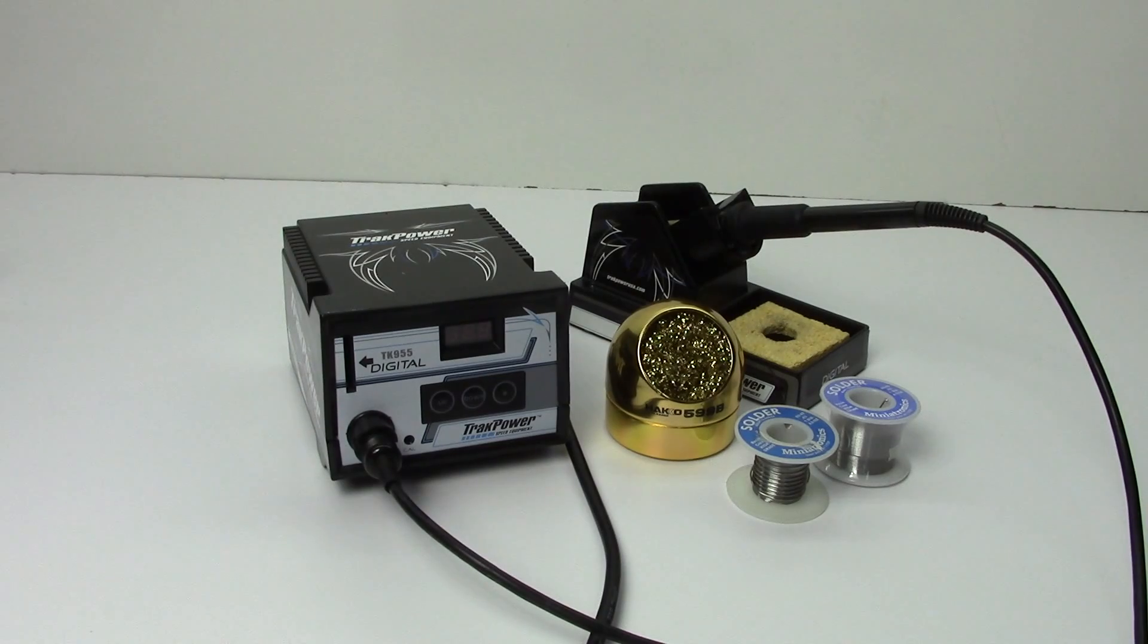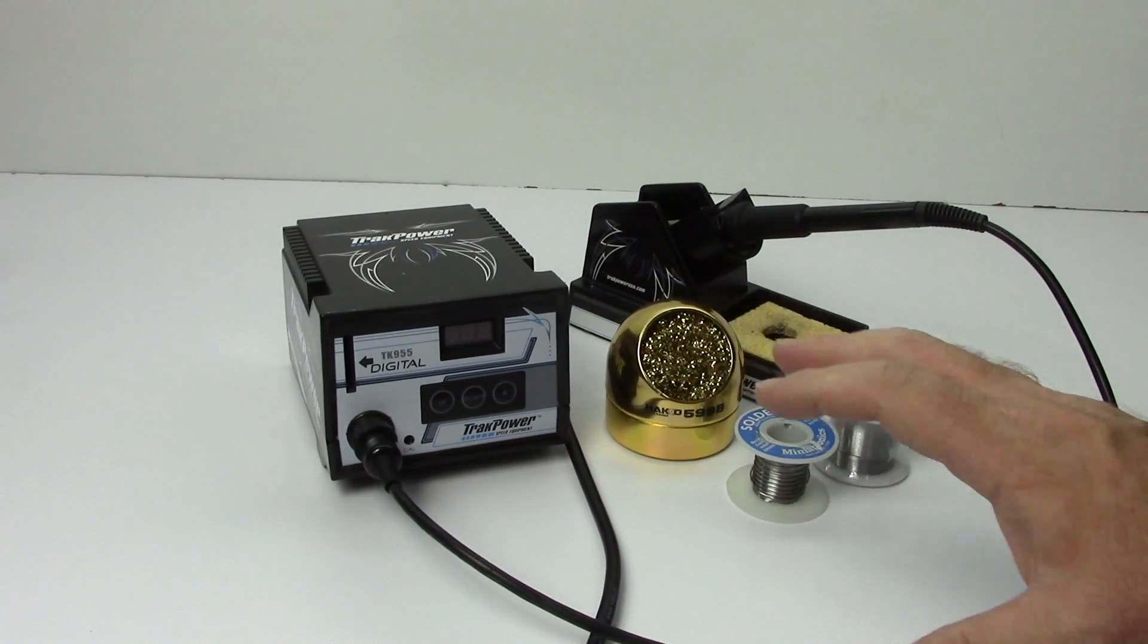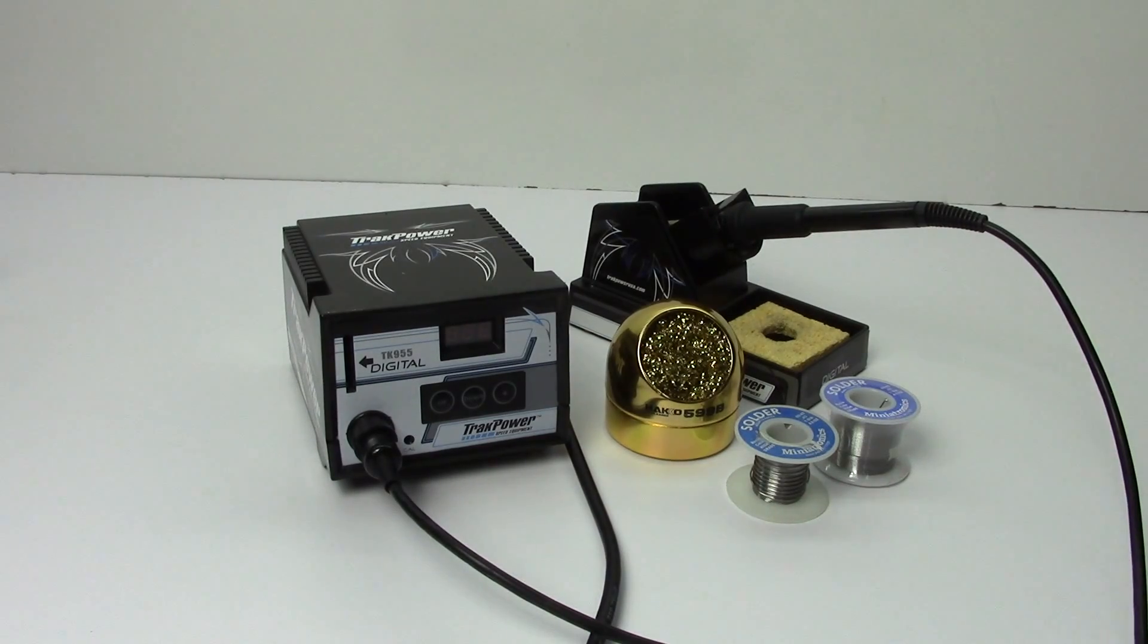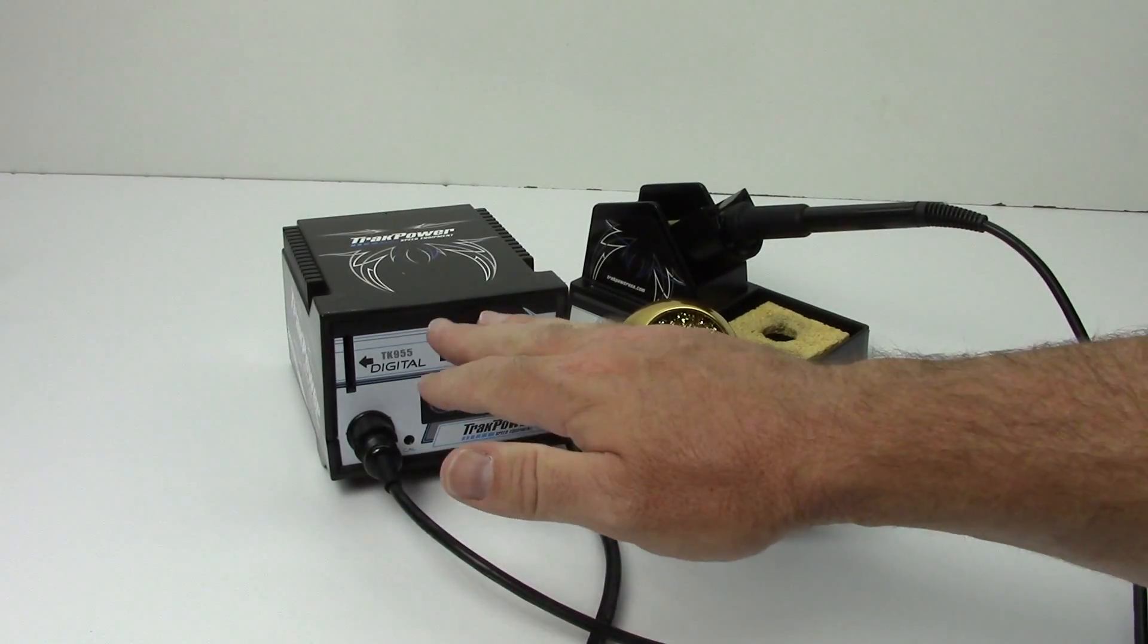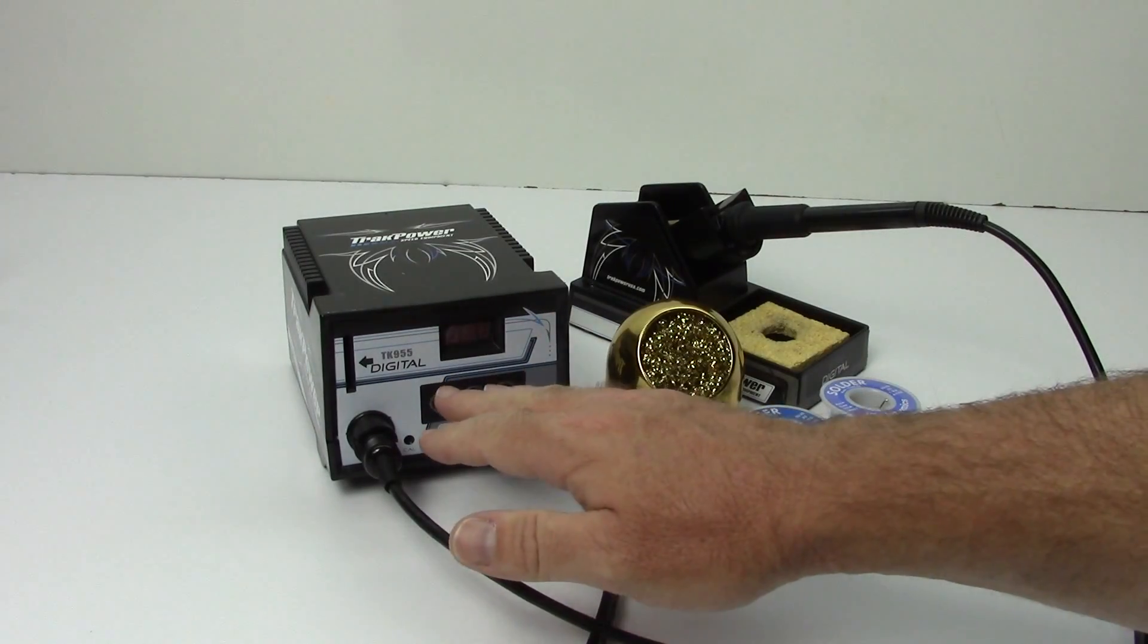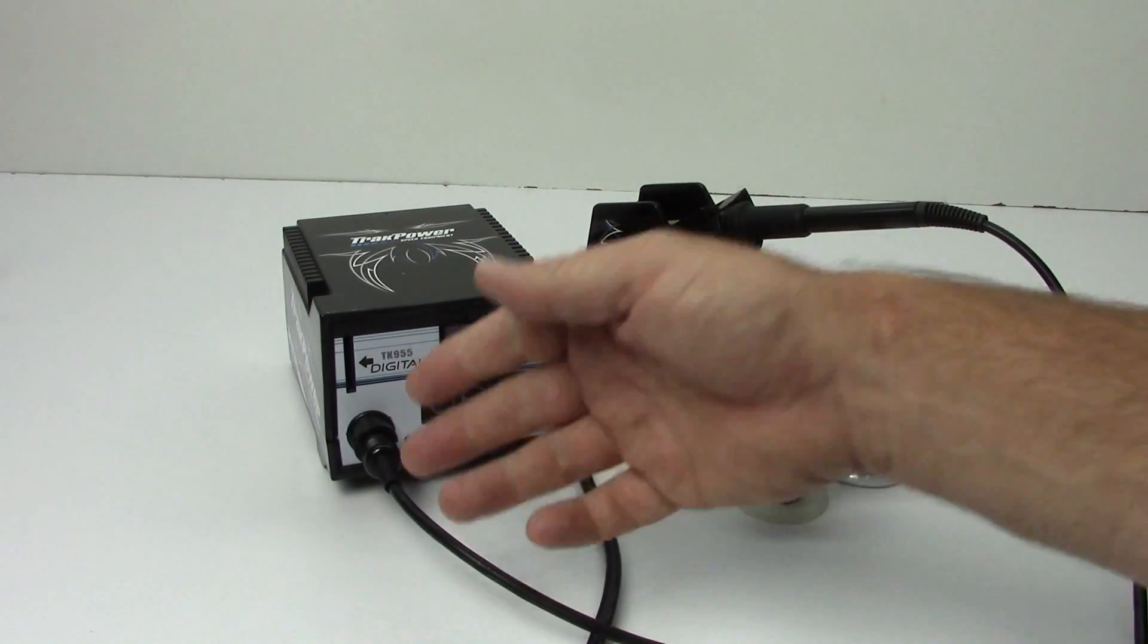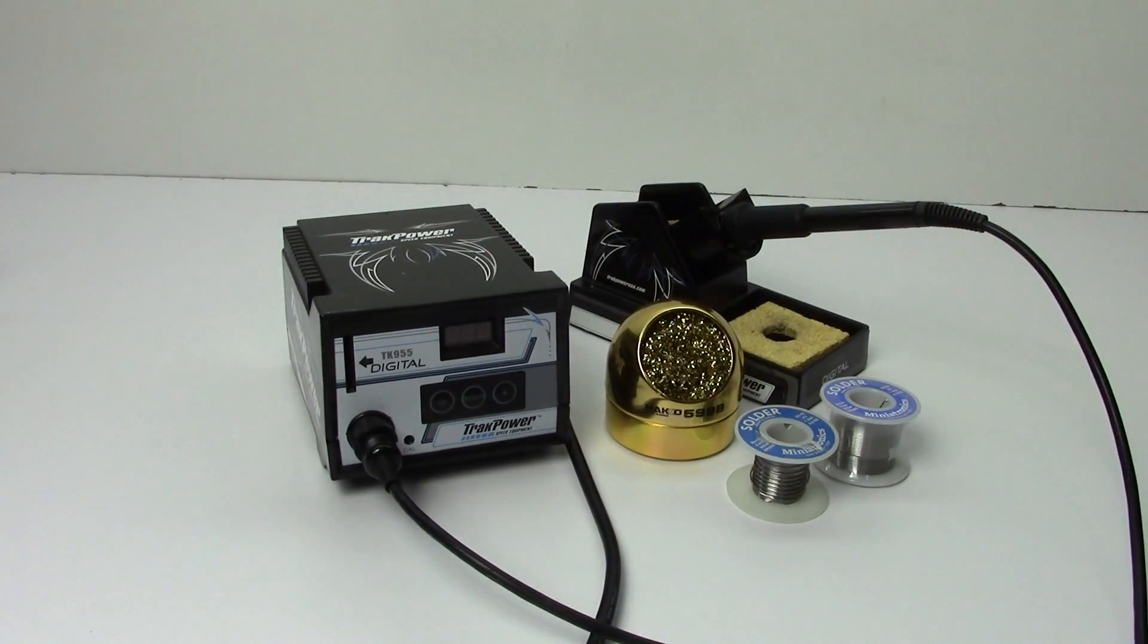Well with that I switched over to a TK950 which is very similar to the 955 you see in front of you. The main difference being instead of a digital version here with an actual readout of the temperature you have a dial here that you would dial to whatever temperature you would like.